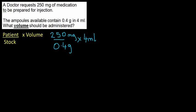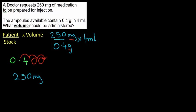Now we see an occasion where the units in the fraction are not the same — milligrams on top, grams on the bottom. I need to convert one of them. I'll convert the awkward one: 0.4 grams to milligrams. Grams to milligrams means multiplying by 1000, which means moving the decimal point three places to the right. Moving it: one, two, three — filling in two zeros — gives us 400 milligrams. So 0.4 grams equals 400 milligrams.